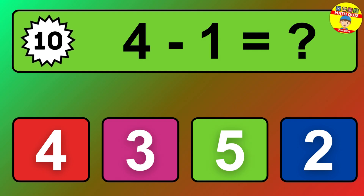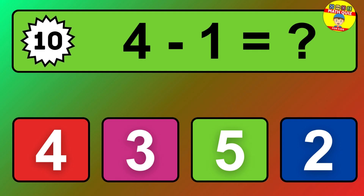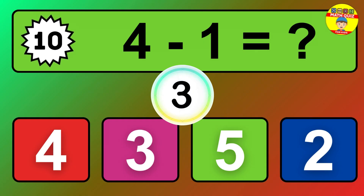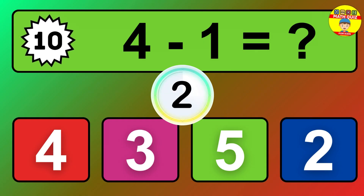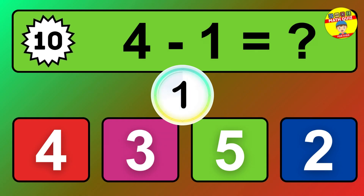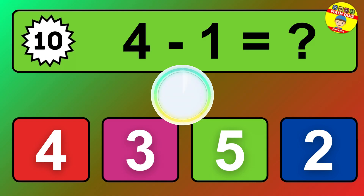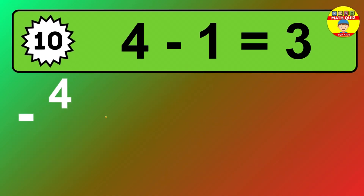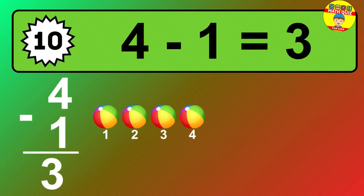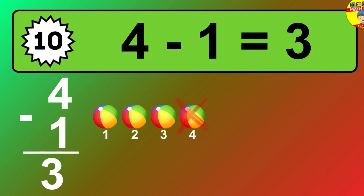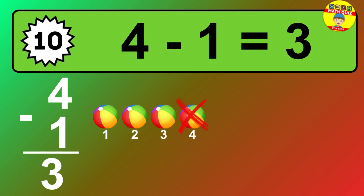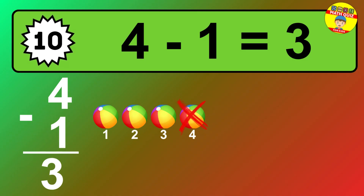Question ten: four minus one equals what? So the answer is four minus one is three. Let's count it: one, two, three.